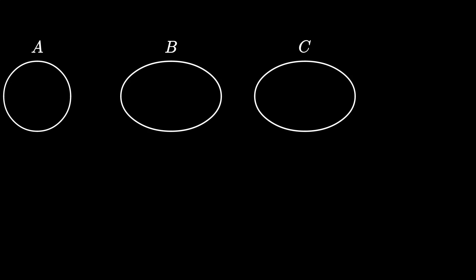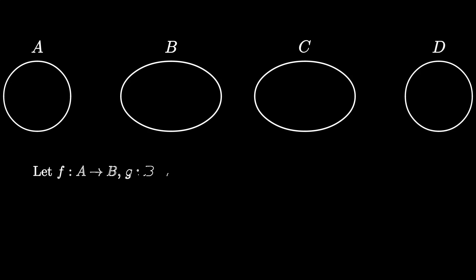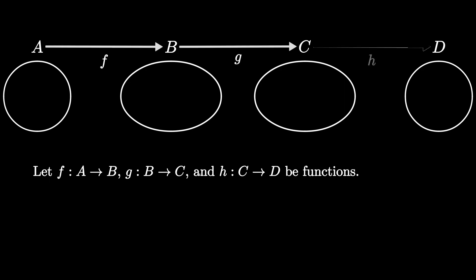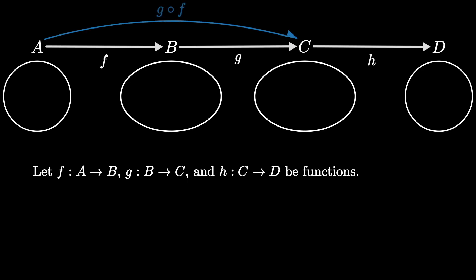Let's see this proof visually. Let a, b, c, and d all be sets. And suppose that f is a function from a to b, g is a function from b to c, and h is a function from c to d. Then we know that g composed f is a function from a to c, and h composed g is a function from b to d.